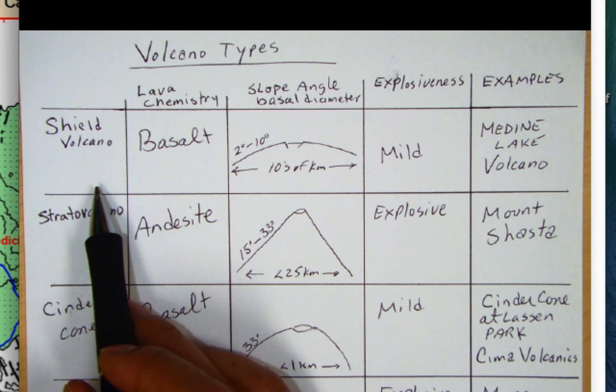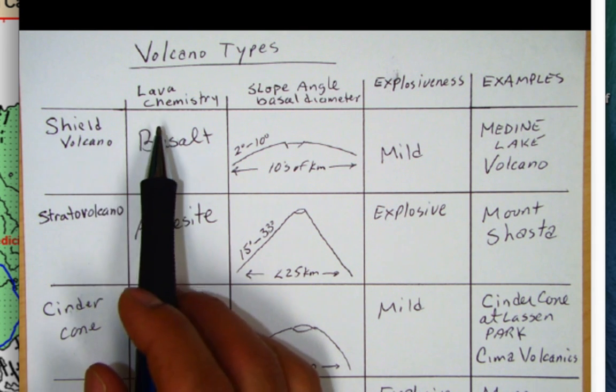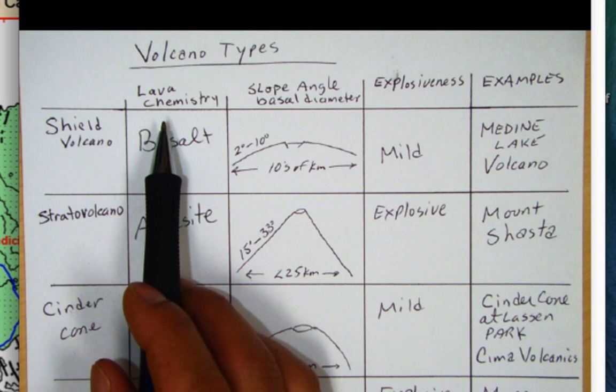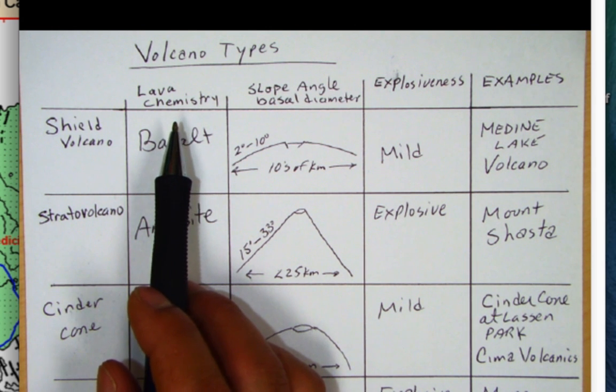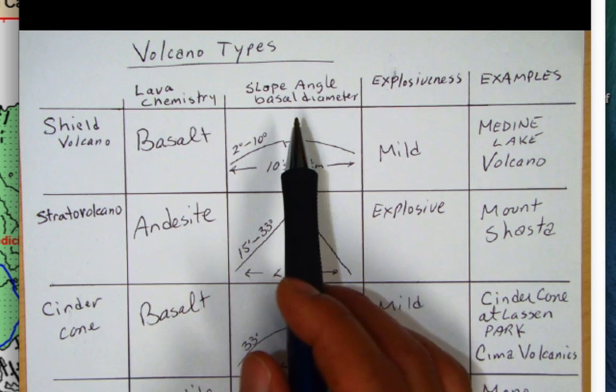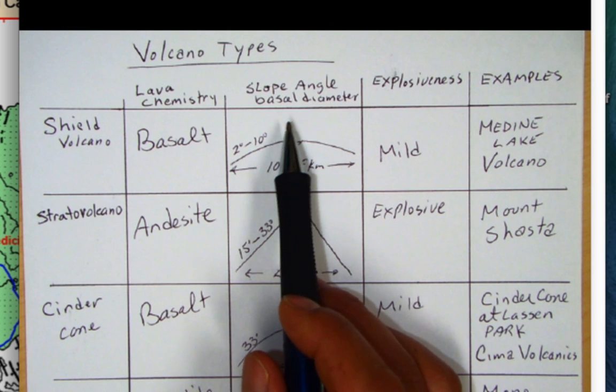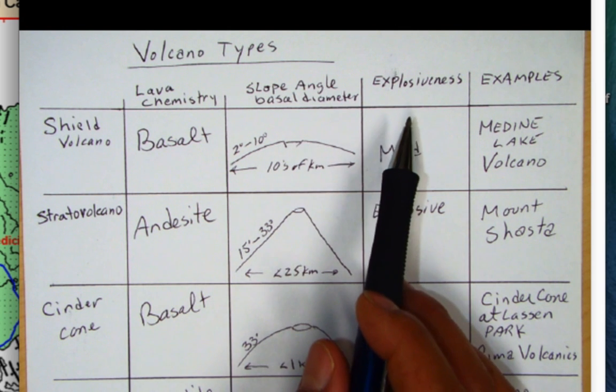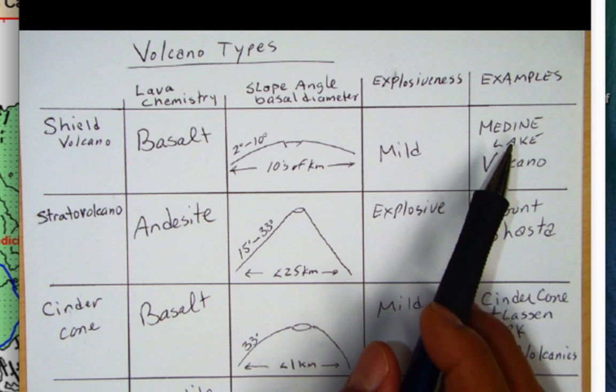The first one I want to mention here is a shield volcano and the way I have it broken down here it's going to be based on lava chemistry. Remember the type of lava dictates the type of volcano we'll see, the explosiveness as well, the slope of the volcano including the basal diameter, again how explosive the volcano is, and then some California examples.